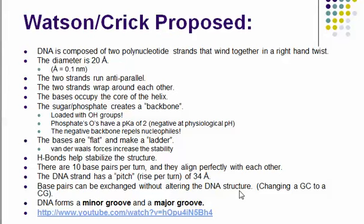The two strands of DNA run anti-parallel. The first strand runs in a five-prime to three-prime orientation, and the complementary strand runs opposite — three-prime to five-prime. The two strands wrap around each other in this corkscrew fashion, twisting right-handed to create this coil.